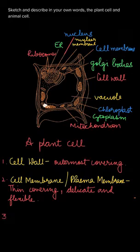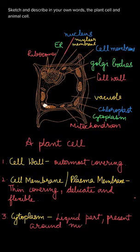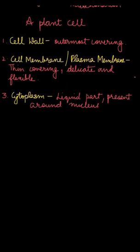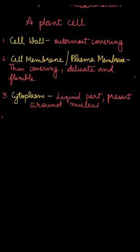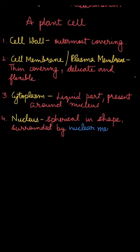Cytoplasm is the liquid part in the cell present around the nucleus. It occupies the space between the plasma membrane and the nucleus, and cell organelles are scattered in the cytoplasm. Nucleus is the most important organelle of the cell — it is a porous double membrane structure that controls all functions of the cell.